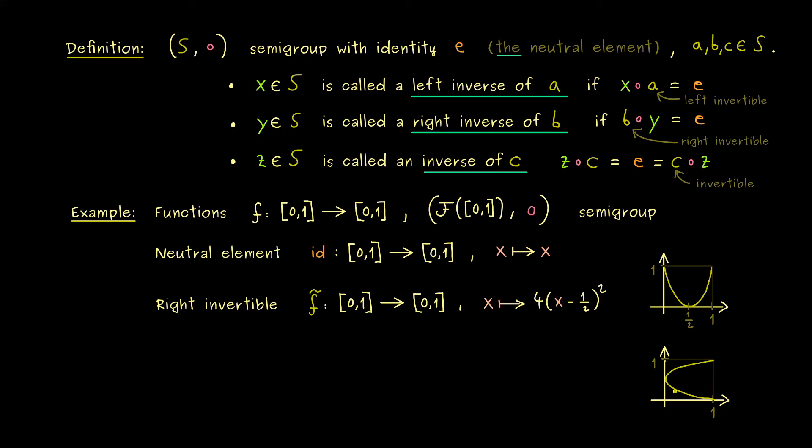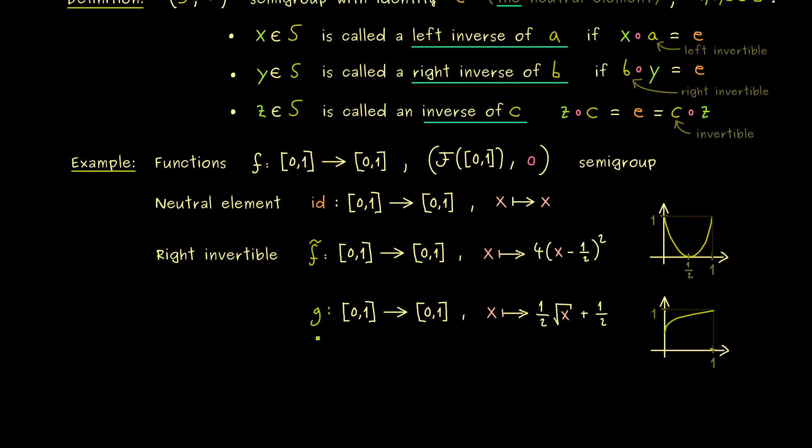More precisely it will be the function x sent to one half of the square root of x plus one half. And now if we form the composition of both functions we see that g is a right inverse of f tilde. Indeed this should not be so surprising because this is exactly how we have defined the function g.